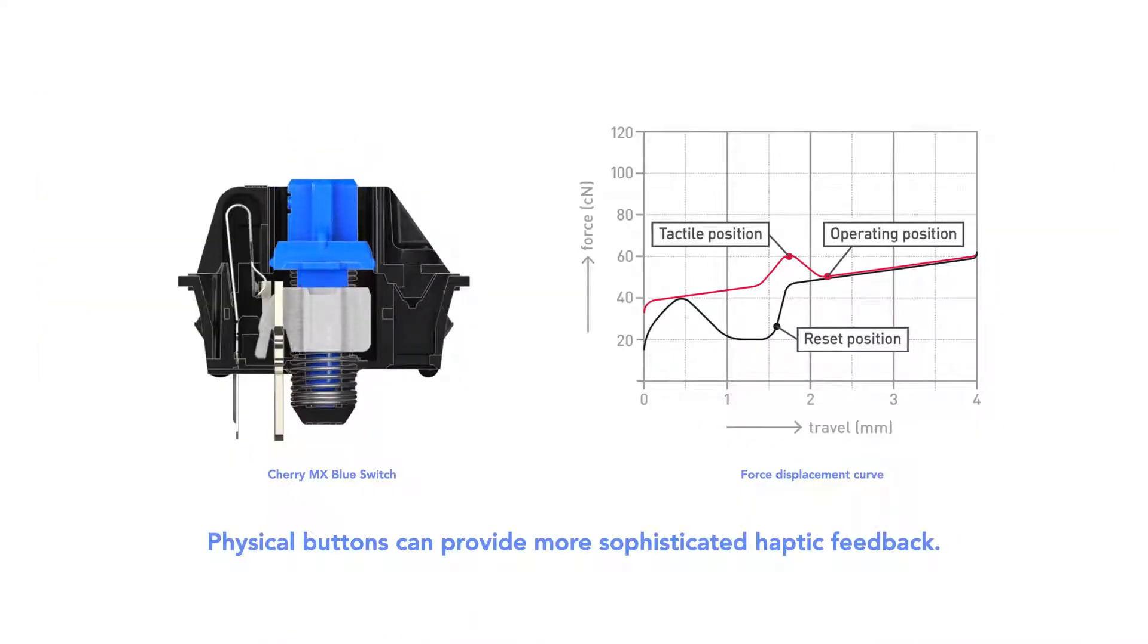Physical buttons can potentially provide more sophisticated haptic feedback during their travel range, which is commonly described in the form of force displacement curves. The haptic properties of a physical button are determined by its mechanical structure and material.